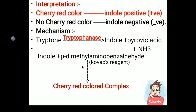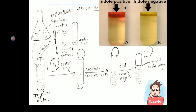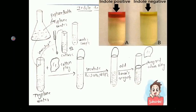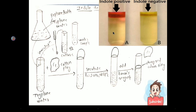Sometimes the cherry red color forms not at the surface but at an intermediate position in the test tube. This can occur when the apparatus is not properly washed. To avoid this intermediate result, we add Ether or xylene reagent, which extracts more indole to the upper surface, preventing intermediate ring formation.